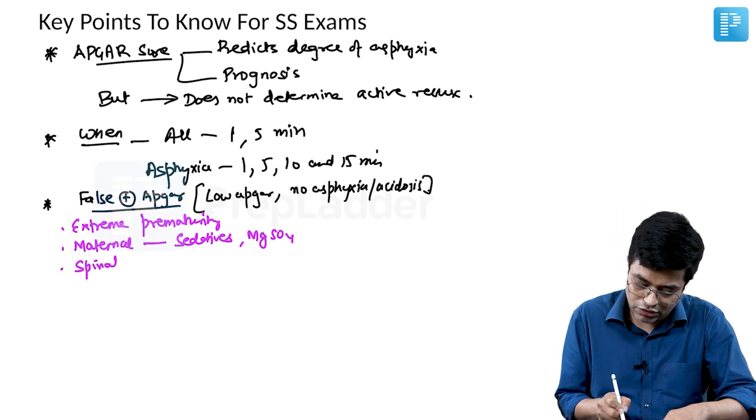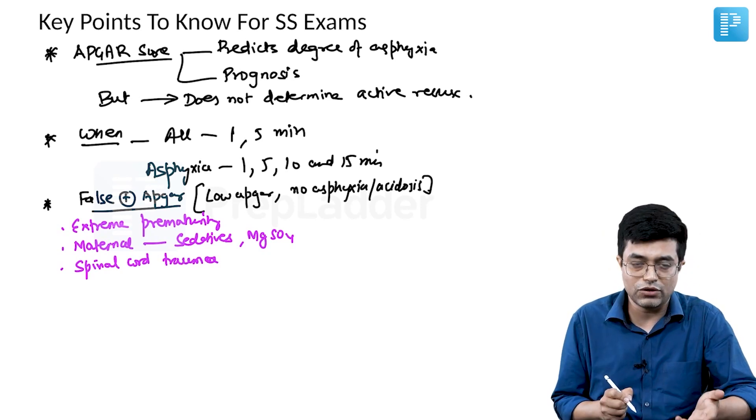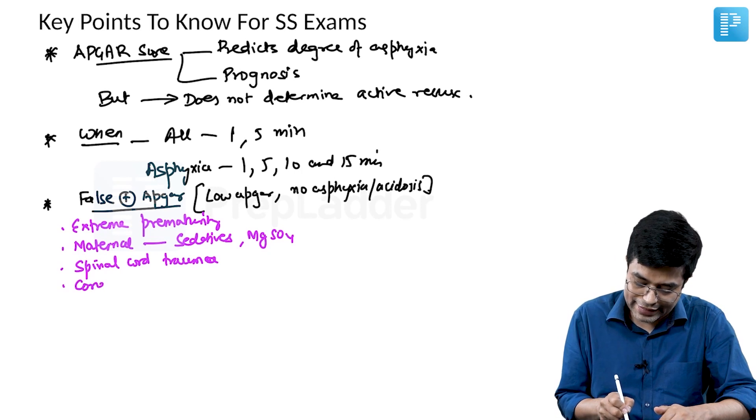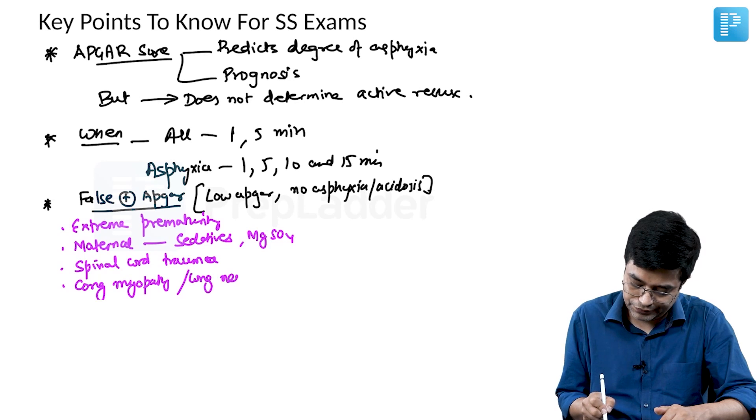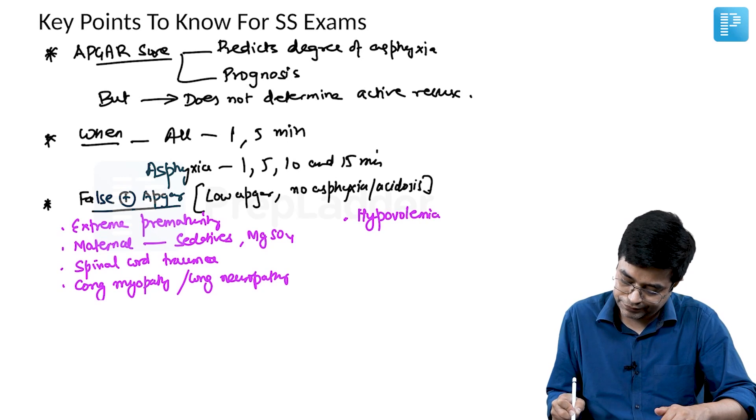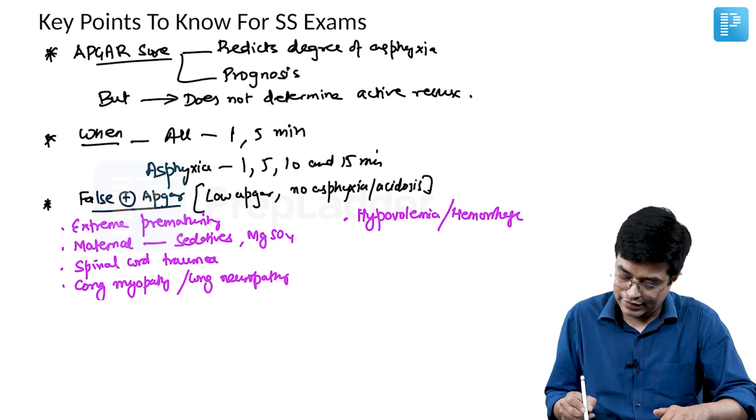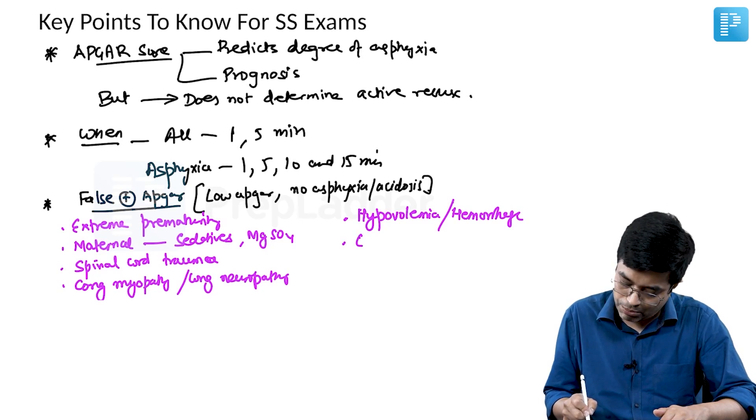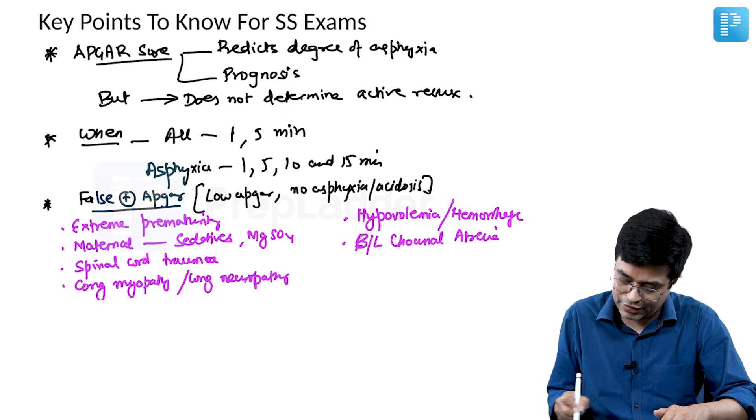Any spinal cord trauma in the child, in the baby of course, then it will cause false positive APGAR score. Any congenital myopathy or congenital neuropathy in the baby can cause a false positive APGAR score. Then if the baby is having any hypovolemia due to hemorrhage, it can cause a false positive APGAR score.